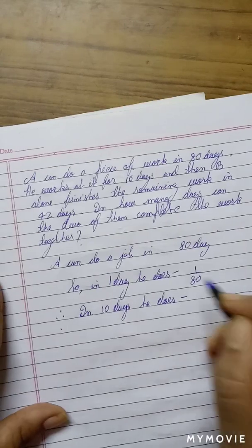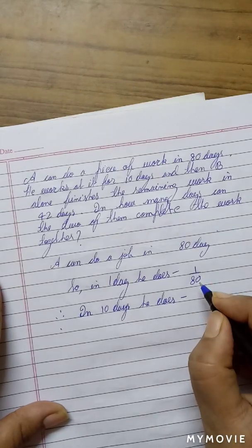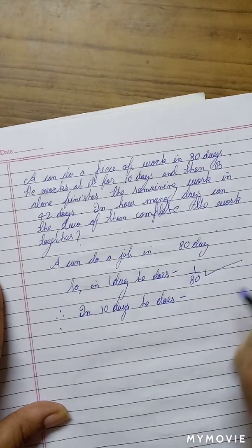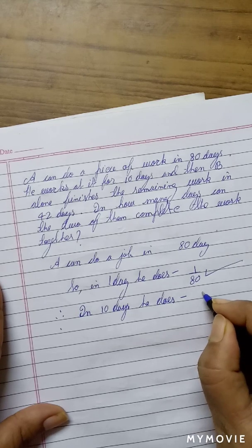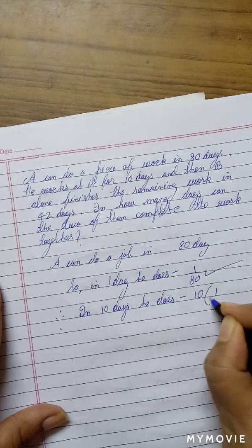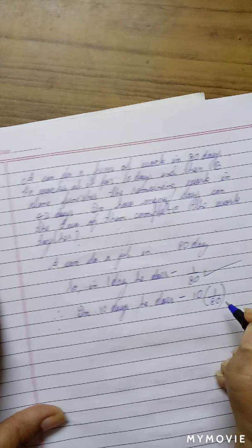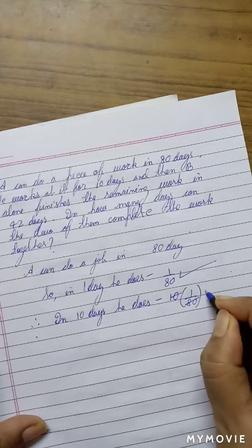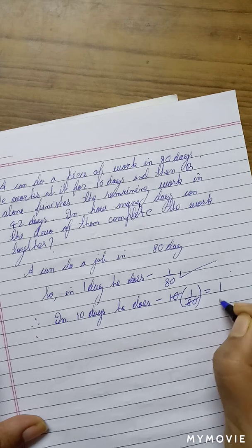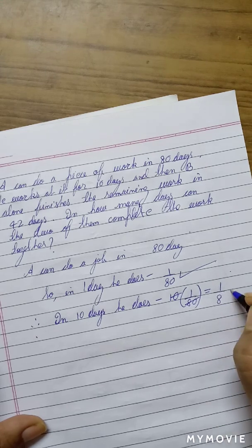E can do the piece of work in 80 days, so in 1 day he will do 1 upon 80th part of work. In 10 days, he will do 10 multiplied by 1 upon 80, which is equal to 1 eighth of the work.